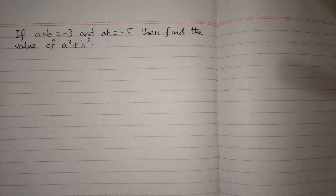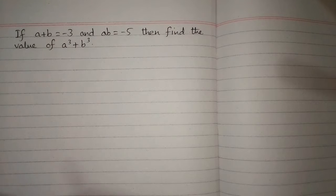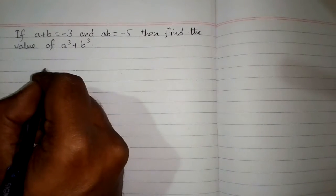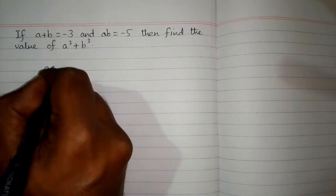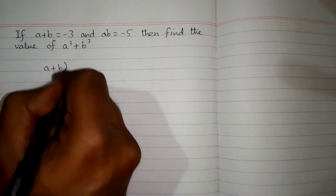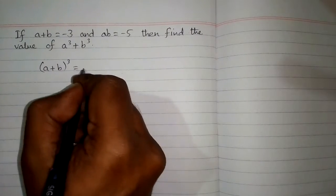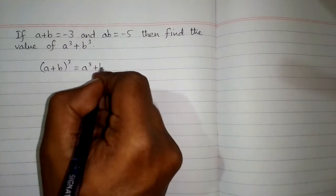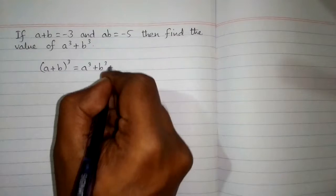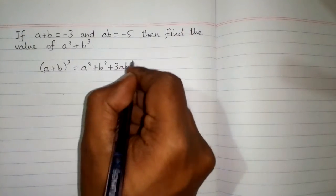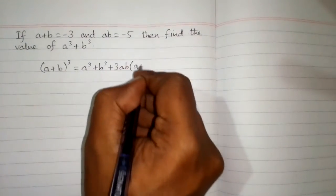If a plus b is equal to minus 3 and ab is equal to minus 5, then find the value of a cube plus b cube. We will use the algebraic identity: a plus b whole cube is equal to a cube plus b cube plus 3ab multiplied by a plus b.